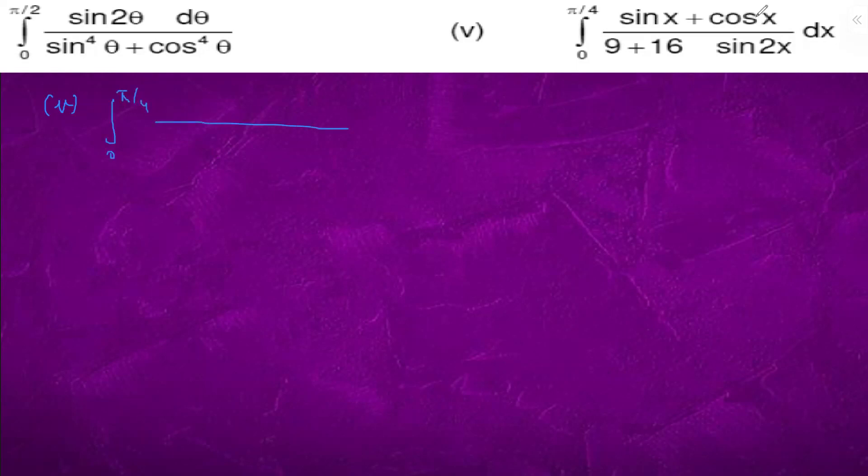So if it is sin x plus cos x, that's in the numerator. In the denominator it should come out to be somewhere sin x minus cos x, so on differentiating it will be sin x plus cos x. We know that sin 2x is 1 minus sin x minus cos x whole square, sin square plus cos square.